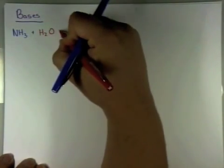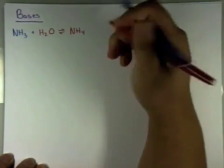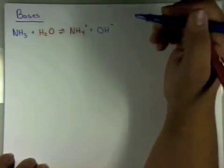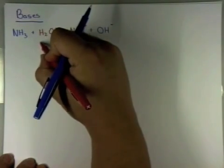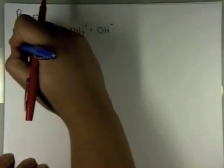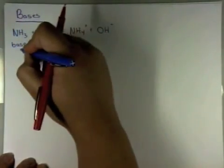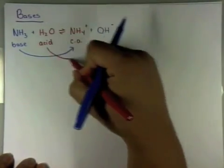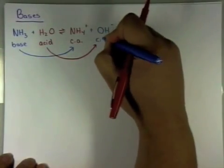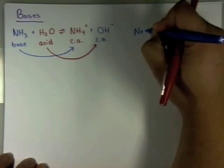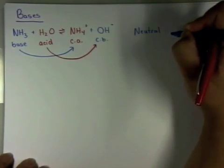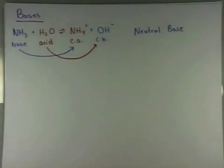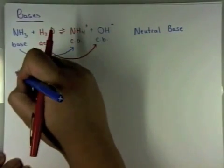So NH3, our very popular weak base. Make sure you get familiar with it because it almost always shows up when they talk about weak bases. So NH3 is your base. H2O in this case is going to be your acid. So therefore, H2O is going to donate an H to NH3. Remember, it's donating an H+. So it becomes NH4+, which is the conjugate acid. I'm abbreviating now because I think you all get the point. And the acid forms the conjugate base, which is OH-. So this is a neutral base.